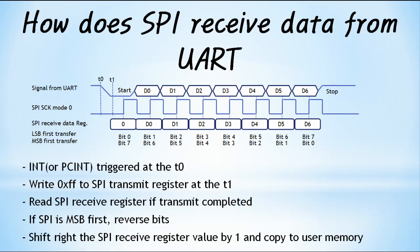After register evacuation, write 0xFF to the SPI transmit register at T1. When writing 0xFF, the MOSI pin remains high, so the signal input to the MISO pin is sampled as shown in the figure without affecting the receiving UART device. If the SPI used is MSB first, perform bitwise reverse, then shift write by 1 bit and copy to user memory. If nested interrupts are not allowed and UART data arrives while another interrupt is using the CPU, the INT/PCINT detecting the start bit will not work and data may be lost.